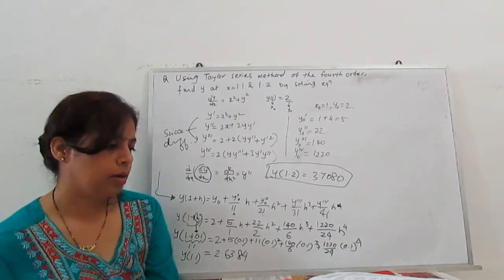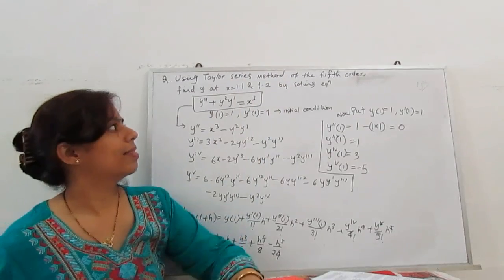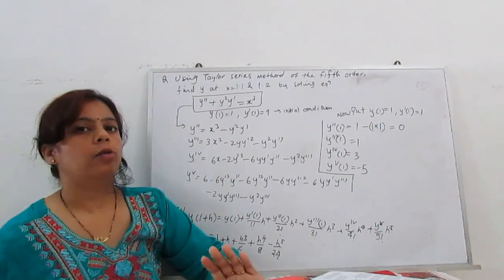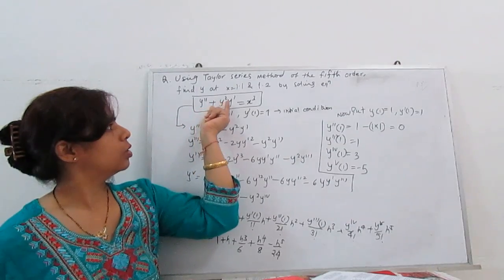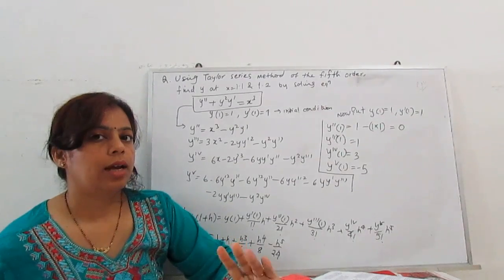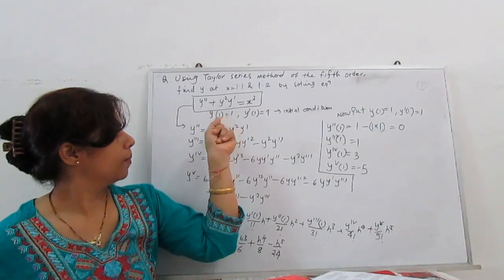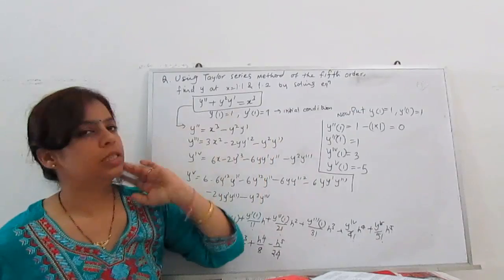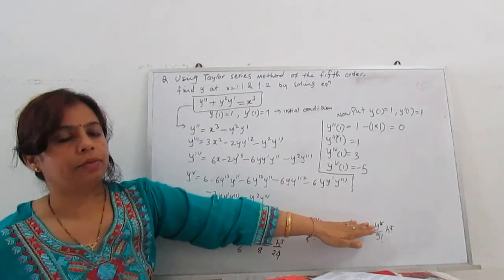Now another example on Taylor series expansion. Using the Taylor series method of the fifth order, find y at x = 1.1 and 1.2 by solving the second-order equation: y'' + y²·y' = x³, with initial conditions y(1) = 1 and y'(1) = 1. So x₀ = 1, y₀ = 1, y'₀ = 1. Since it's fifth order, we need to differentiate up to fifth order.